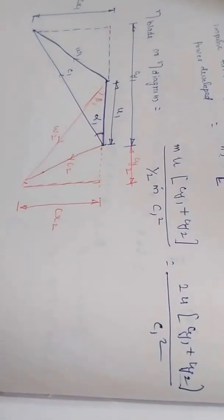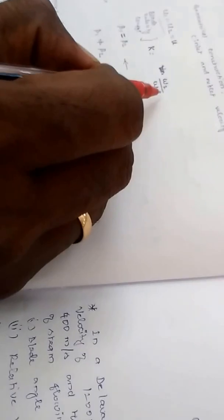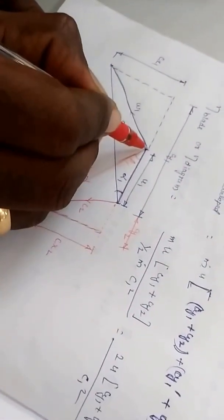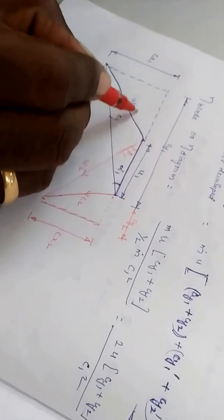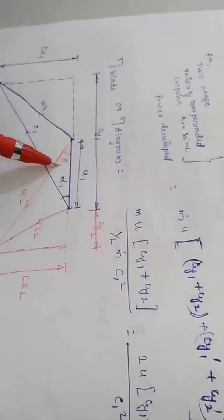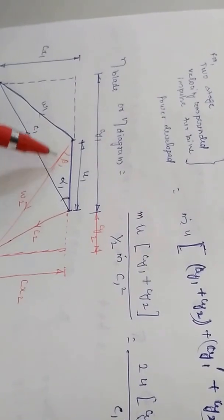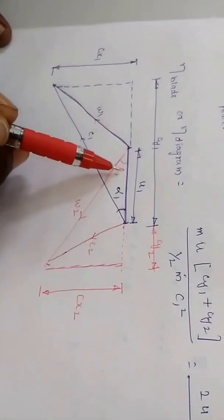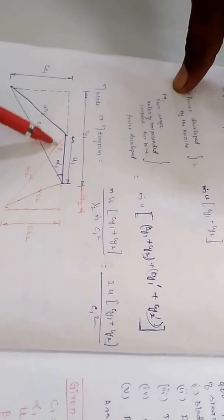To construct the outlet velocity triangle, the blade velocity coefficient is normally specified in the problem. This coefficient is the ratio of the outlet relative velocity W2 to the inlet relative velocity W1. Measure the inlet relative velocity from the triangle and convert using the scale. Multiply the blade velocity coefficient K by the inlet relative velocity to get the outlet relative velocity W2. The inlet blade angle beta1 is also given in the problem, so both W2 and beta1 are known and you can draw the outlet relative velocity line.